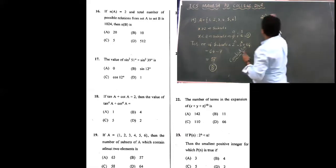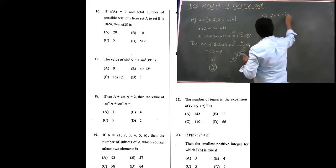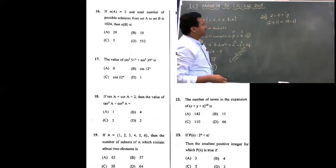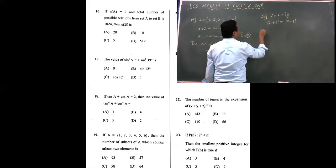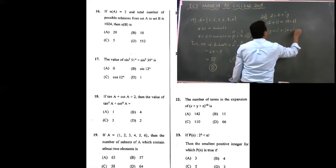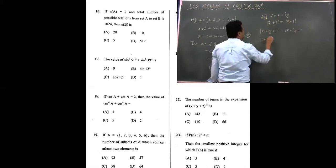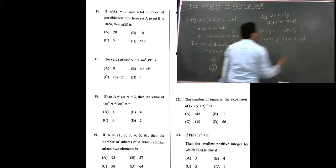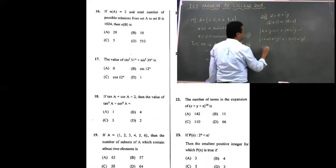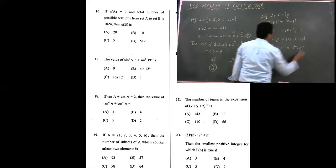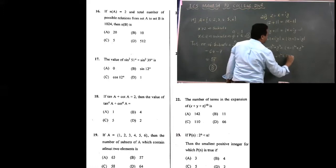If Z equals X plus IY and mod Z plus 1 equals mod Z minus 1, which represents... Let us substitute Z value. X plus IY plus 1 equals X plus IY minus 1. Group the real numbers together: x plus 1 plus IY and x minus 1 plus IY is the second group. Hence, we are finding modulus of a complex number. What should be your answer? x plus 1 whole square plus y square equals x minus 1 whole square plus y square. Therefore, x plus 1 whole square equals x minus 1 whole square.